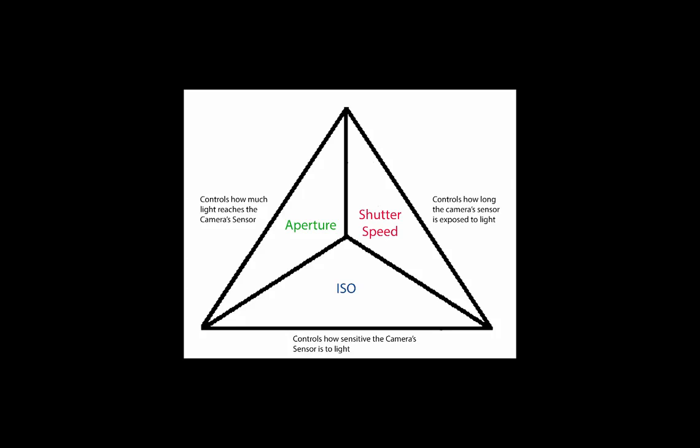The three controls on the camera that affect a well-exposed image are aperture, shutter speed, and ISO. Aperture is the size of the lens opening — it controls how much light enters the camera and hits the sensor, and it also affects depth of field. Shutter speed dictates how long that light is allowed to hit the sensor, and it affects how motion will appear within an image, whether sharp or blurred. ISO stands for International Standards Organization and refers to the sensitivity of the sensor to incoming light.